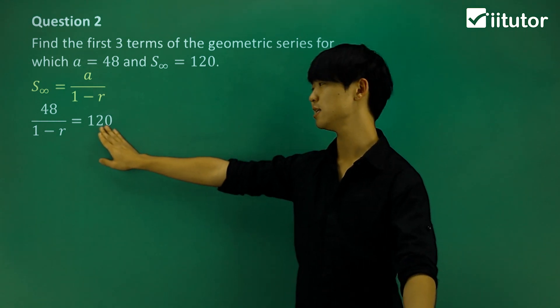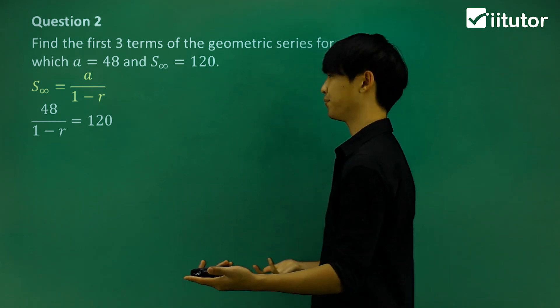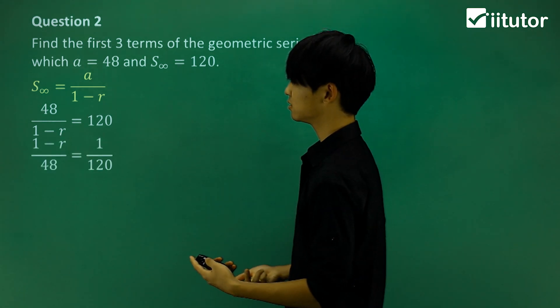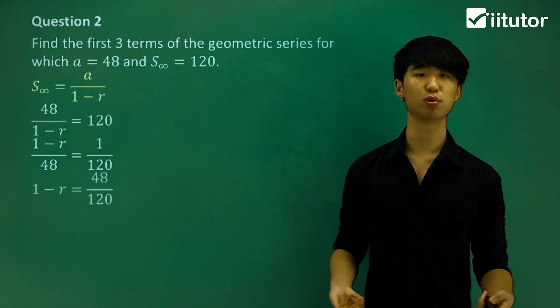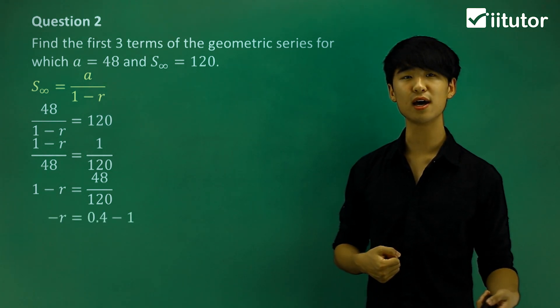I can see that I can find r from this equation; r is the only unknown. I'm going to reciprocate both sides to find r. Let's isolate everything away from r, multiply both sides by 48, and move one to the other side.